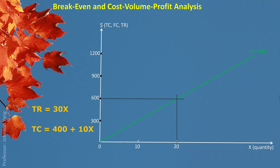The $400 fixed cost has nothing to do with quantity. Even if you don't produce anything, you still have $400. So on the vertical axis you have $400. That point connects to give us the red line, which is the total cost straight line. We can clearly see the red line and the green line cross — their intersection point is at quantity 20 with $600. That's what we call the break even point.